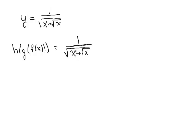What I notice is, first off, under this radical, I've got an x plus square root of x. So that's the most inside function. I'm going to let that be f of x. So f of x is going to be x plus square root of x.